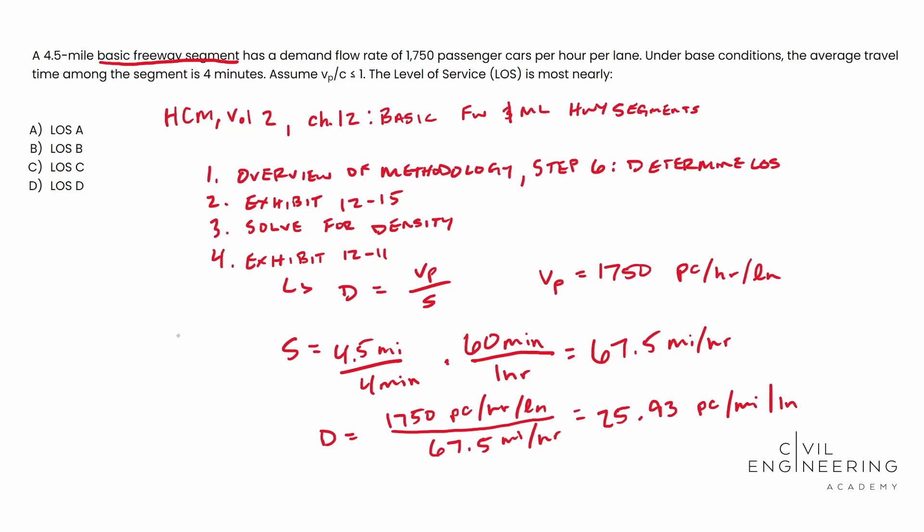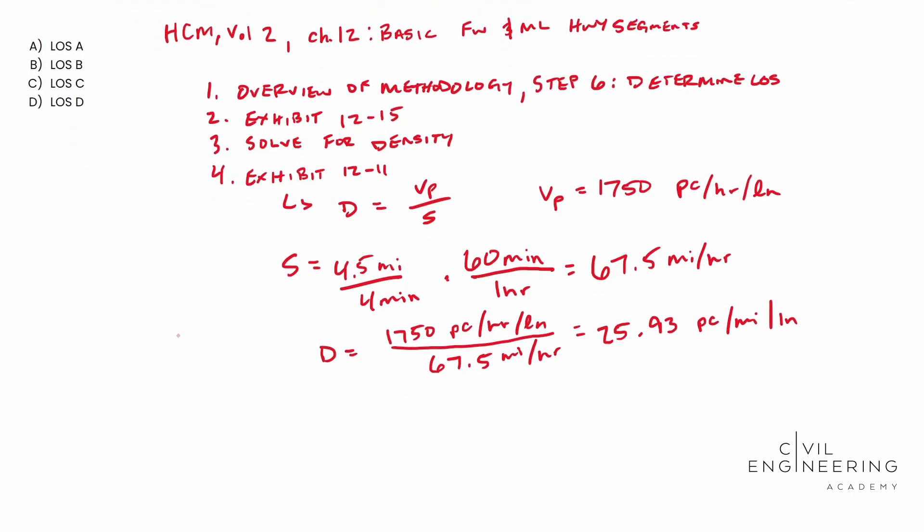All right. Now, what do we do with this information? I'm glad you asked. What we need to do with this information is we need to plug it into exhibit 12 dash 15. Remember that was referenced earlier in the problem. Exhibit 12 dash 15 is going to have what we need. And that's going to outline the different requirements, I guess, for the LOS. And so whenever we go to that exhibit, we'll notice that our answer, this 25.93 is actually greater than 18 or in between, sorry, 18 to 26. And so therefore this is going to be LOS C.